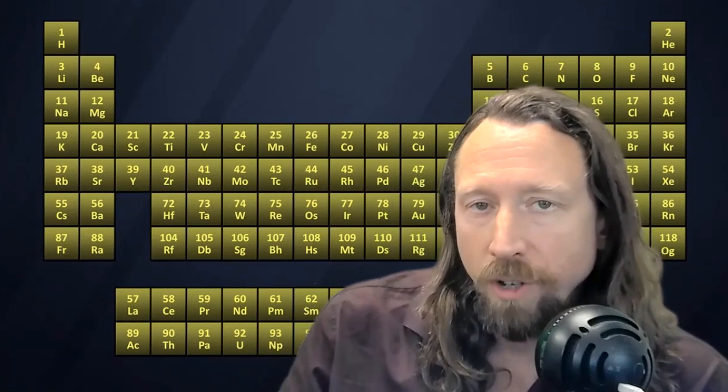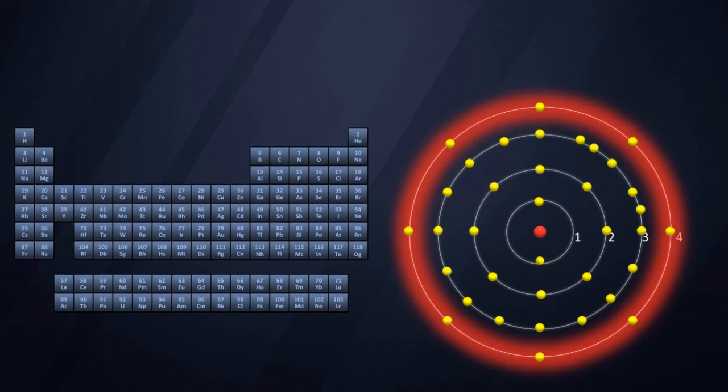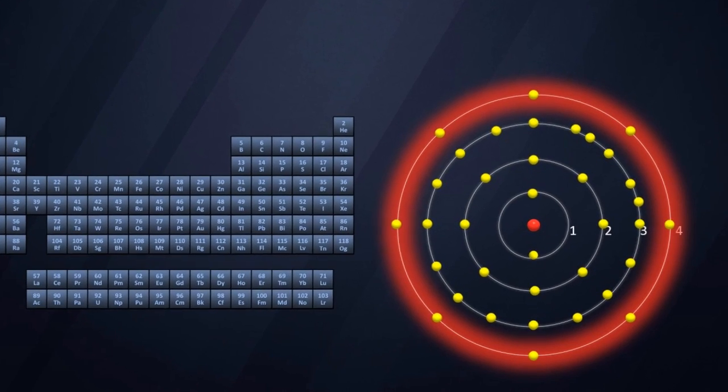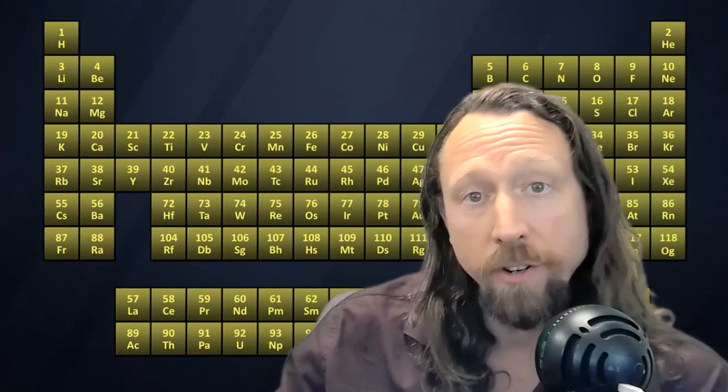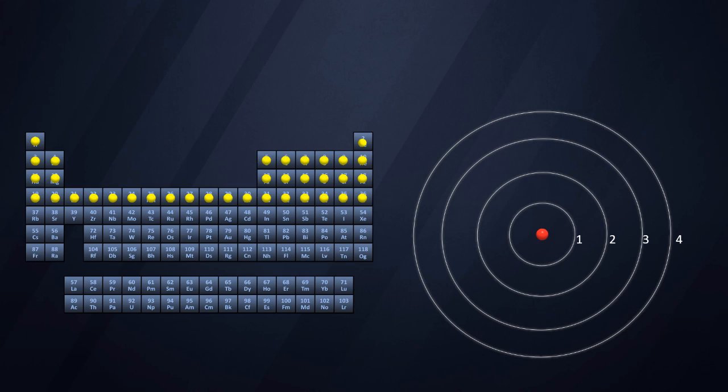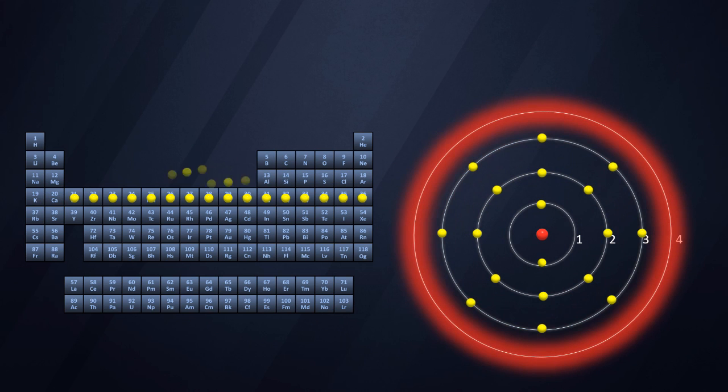Today we're going to follow up on our conversation from last week where we discussed the origin of the name transition metals. Recall that this term dates back to more than 100 years ago when the Bohr model of the atom was still the most sophisticated model. It was realized that while electrons fill energy levels or shells around the nucleus, they don't do so in a purely sequential fashion. Every so often they transition back to filling an interior shell before going back to the outside and continuing along.